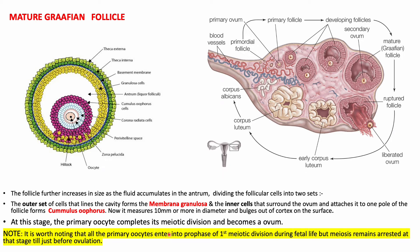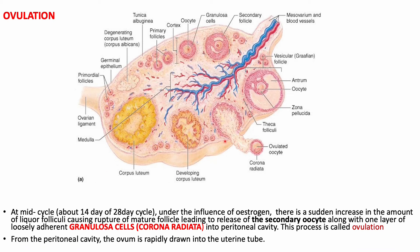It is important to note that all primary oocytes enter prophase I of meiotic division during fetal life, but meiosis remains arrested at this stage until just before ovulation. At mid-cycle, around day 14, under the influence of estrogen, there is a sudden increase in the amount of liquor folliculi, causing rupture of the mature follicle. This releases the secondary oocyte along with one layer of loosely adherent granulosa cells called the corona radiata into the peritoneal cavity — a process called ovulation. The ovum is then rapidly drawn into the uterine tubes.